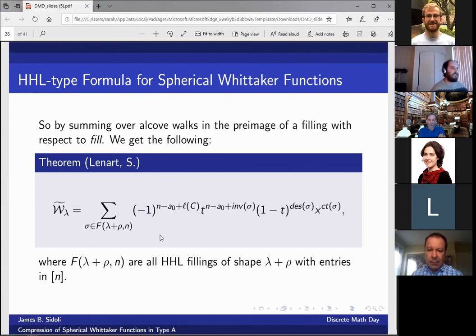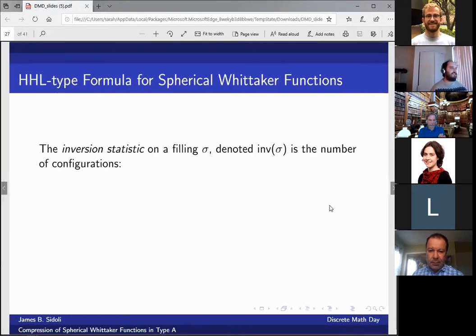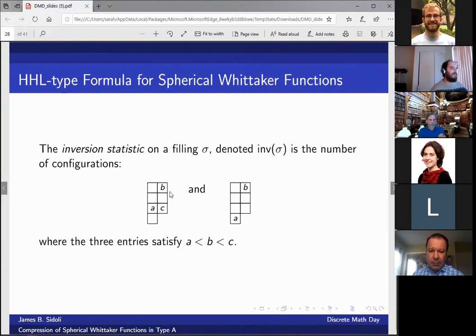And so now we're ready to state our HHL type formula. We have it here. This is for the spherical Whitaker function. And we have some statistics on these HHL fillings. We have F(lambda + rho) is just the set of all HHL fillings of shape lambda plus rho with entries in N. Des of a filling is the number of strict increases when read across a row. This C is the first column. And A_0 is going to be the unique entry absent from the first column. The CT of sigma is simply the content of the filling. So let's talk about the inversion statistic. It counts triples of the form A, B, and C in this type of configuration with this inequality.